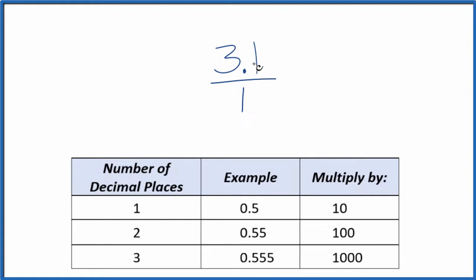We need to get 3.1 to be a whole number, and we have one decimal place. One decimal place, we're just going to multiply by 10. So 10 times 3.1, that equals 31.